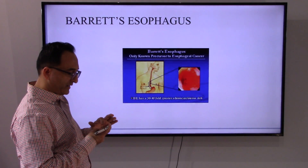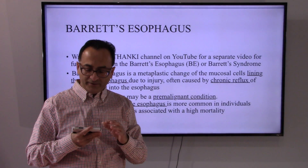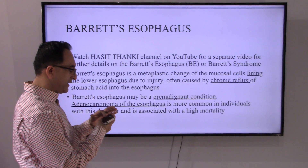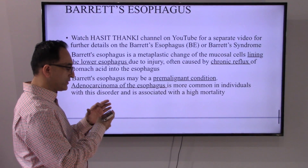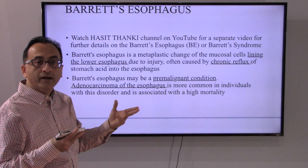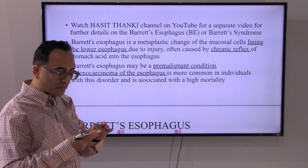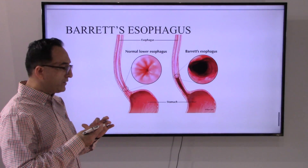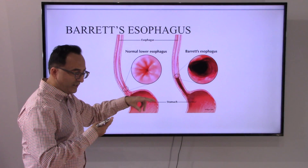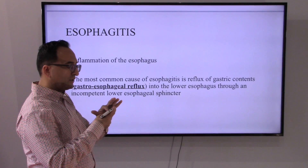Barrett's esophagus is of concern due to potential malignancy. There is a separate presentation series on Barrett's esophagus available on YouTube. Basically, this is about the lining of the lower esophagus that can change typically due to chronic reflux, and this may turn into a pre-malignant condition. This is what you would see through endoscopy, and the biopsy results would confirm the condition.